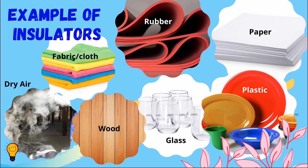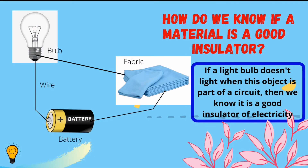Examples of insulators include plastic, rubber, cloth, wood, paper, glass, and dry air. One way to test if an object is a good insulator is to use an open circuit: if a bulb doesn't light when the object is part of a circuit, then we know it is a good insulator of electricity.